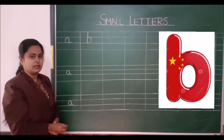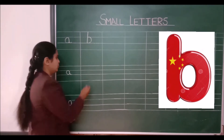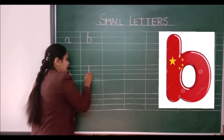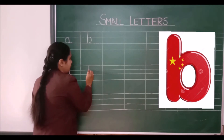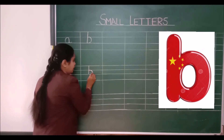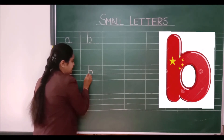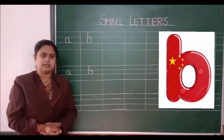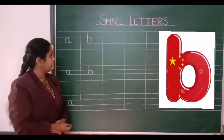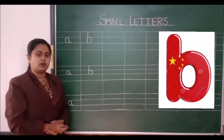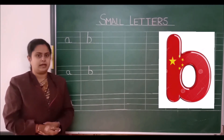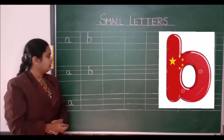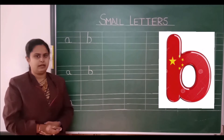Once again, see here. You have to make a standing line, then you have to make a curve like this. This is called small letter B. Children, do also write along.